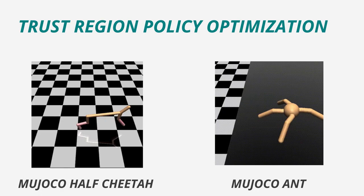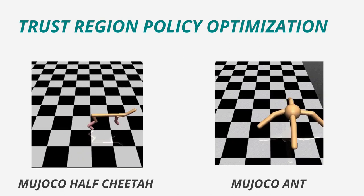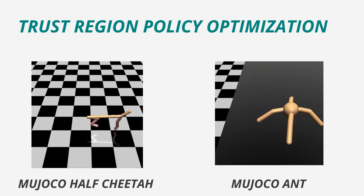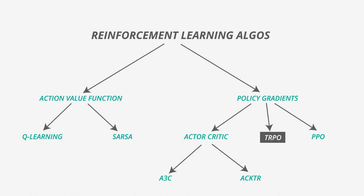Trust Region Policy Optimization is a very important paper for people interested in deep reinforcement learning. It lays the theoretical foundation for approaches which guarantee monotonic policy improvement.